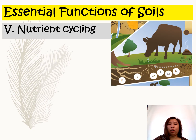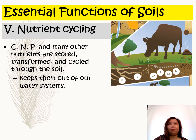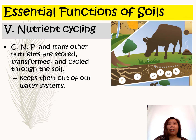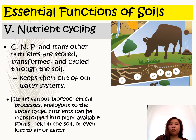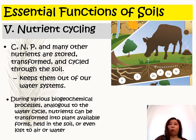Another function of the soil is nutrient cycling. Carbon, nitrogen, phosphorus, and many other nutrients are stored, transformed, and cycled through the soil — this keeps them out of the water systems. During various biogeochemical processes, analogous to the water cycle, nutrients can be transformed into plant-available forms, or they can be held in the soil or even lost to air or water.